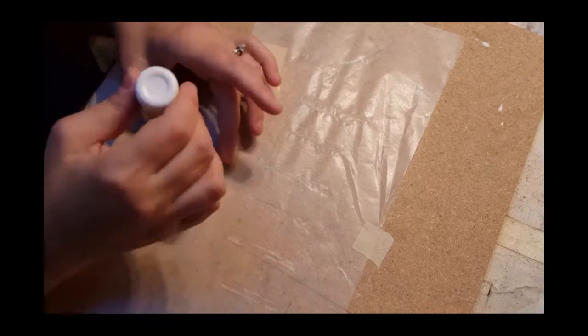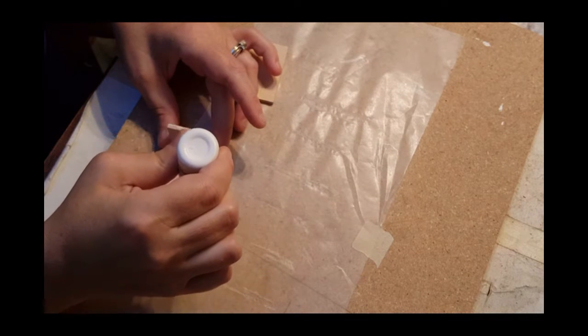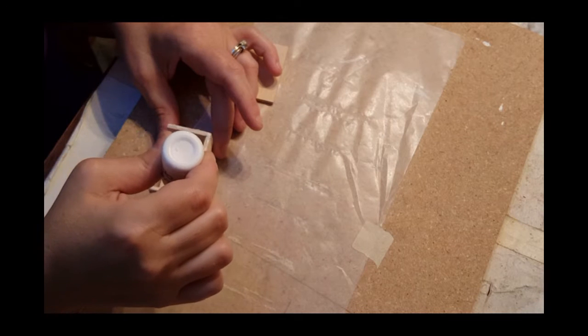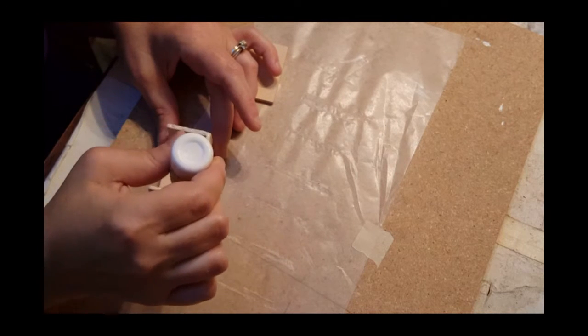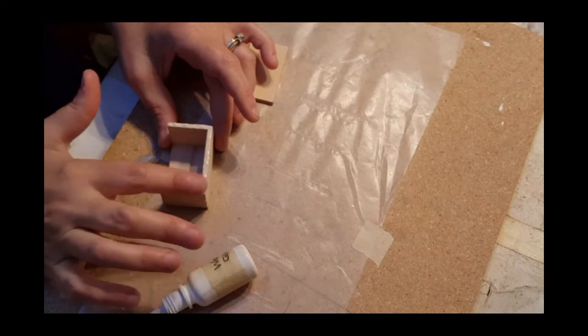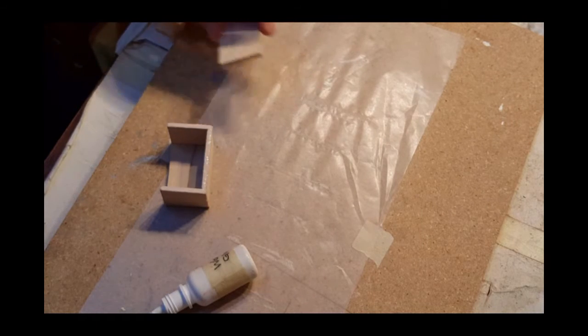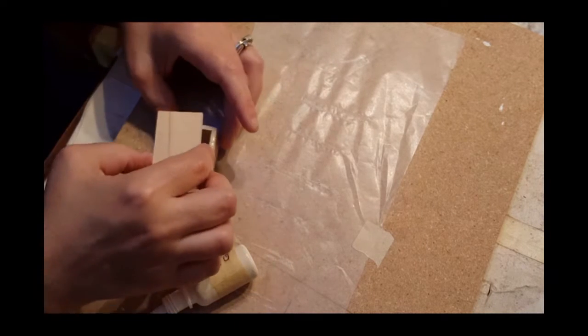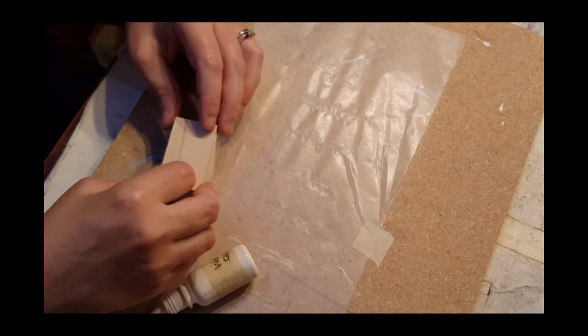Once you have that done, you're going to glue the top one. Apply your glue right around the edge. I like to blot mine just a little bit to try and get rid of some of the bleeding globs, and then you're going to place that on there gently.